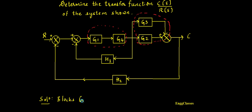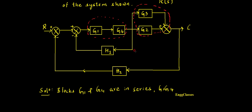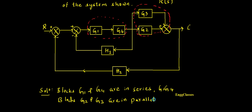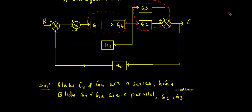G1 and G4 are in series, which means I can reduce two blocks and write one block with loop gain G1 into G4. Then, blocks G2 and G3 are in parallel — in parallel means I can reduce two blocks and write it with one term, that is G2 plus G3.